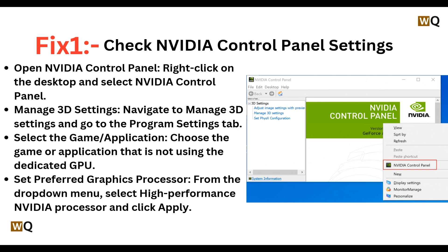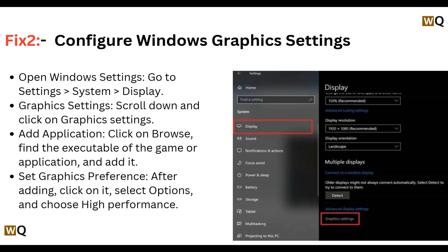Fix 2: Configure Windows Graphics Settings. Open Windows Settings, go to Settings, then System, then Display, then Graphics Settings. Scroll down and click on Graphics Settings. Click Browse to find the executable of the game or application and add it. After adding, click on it, select Options, and choose High Performance.